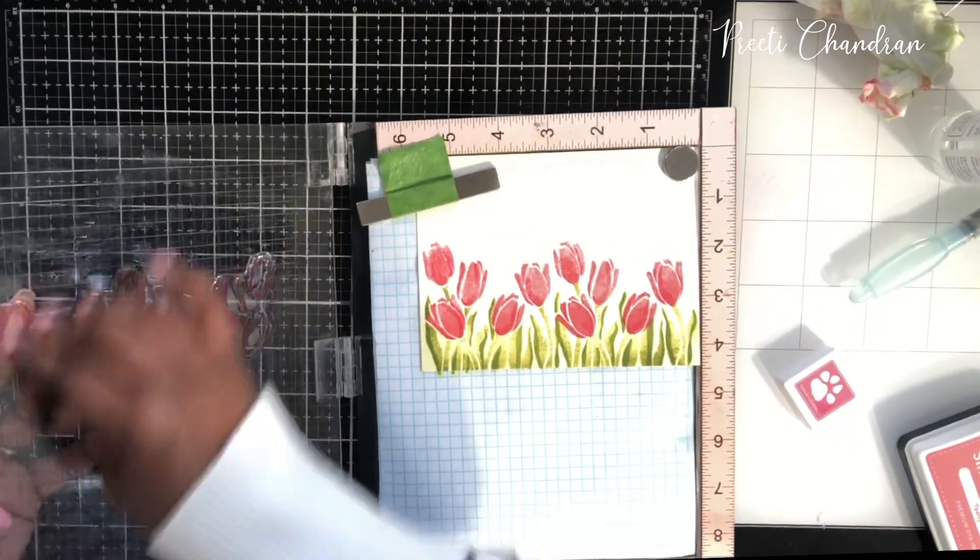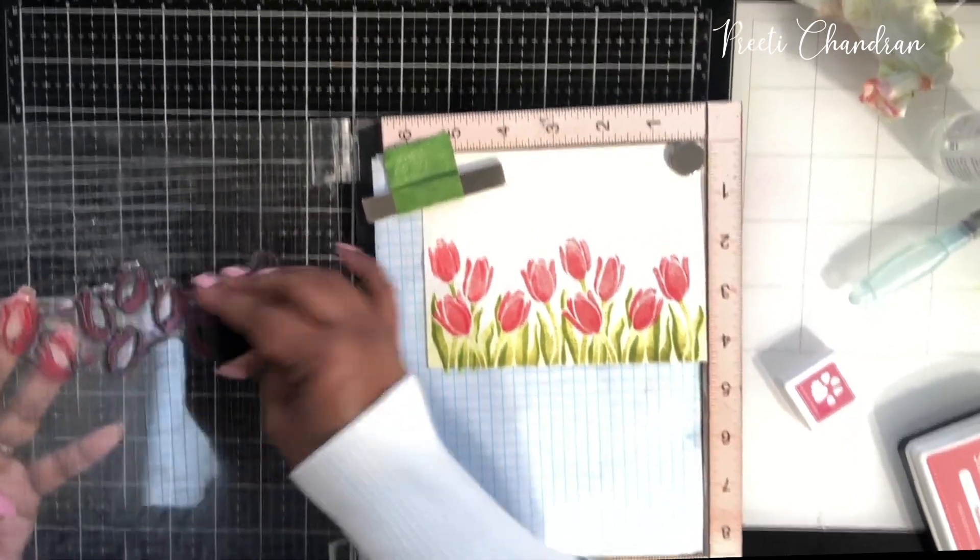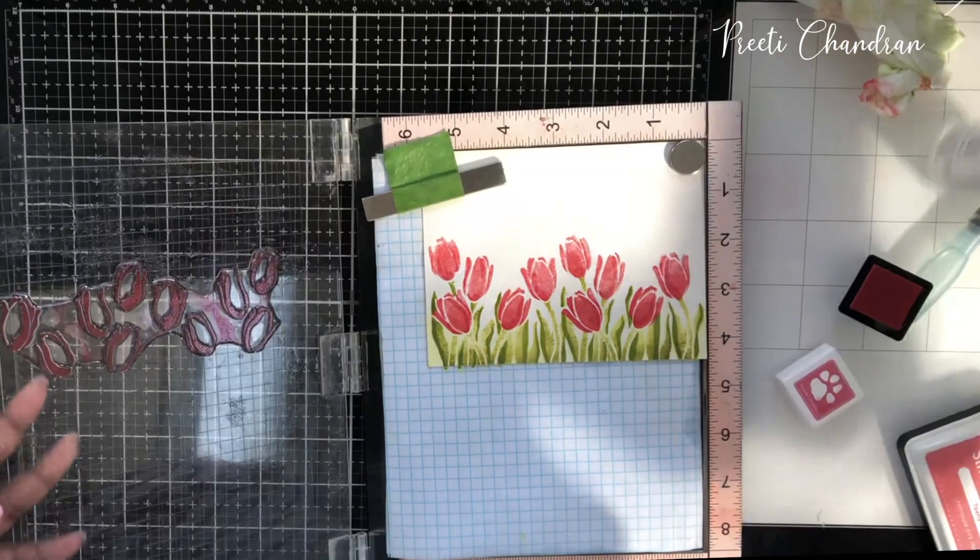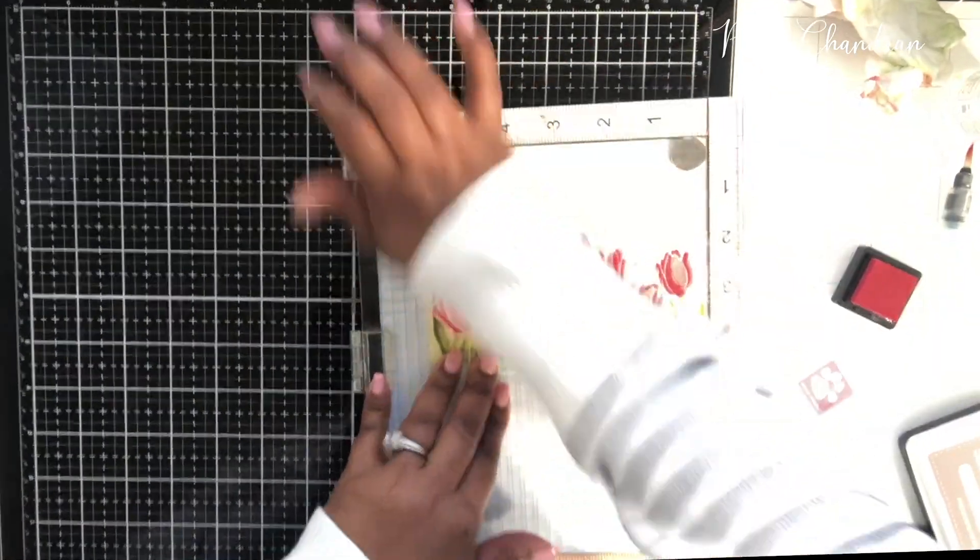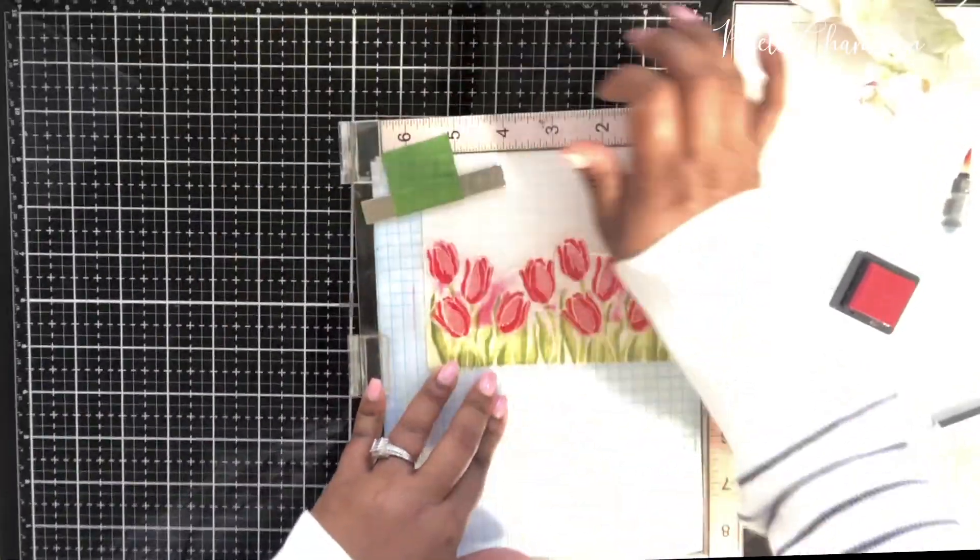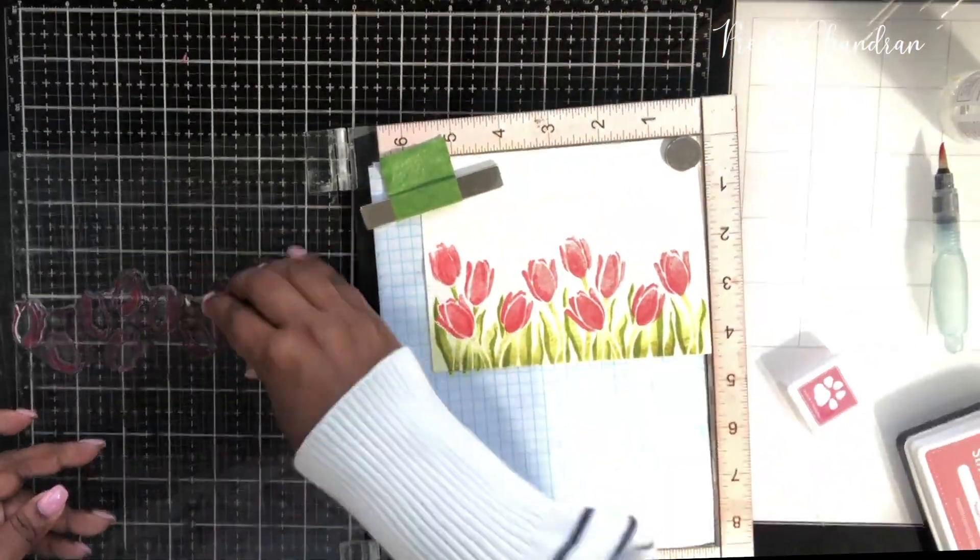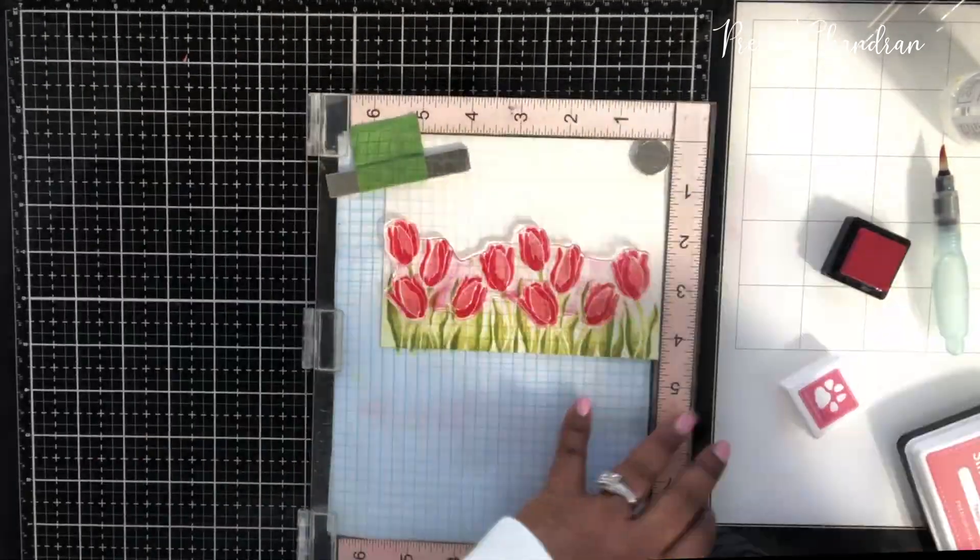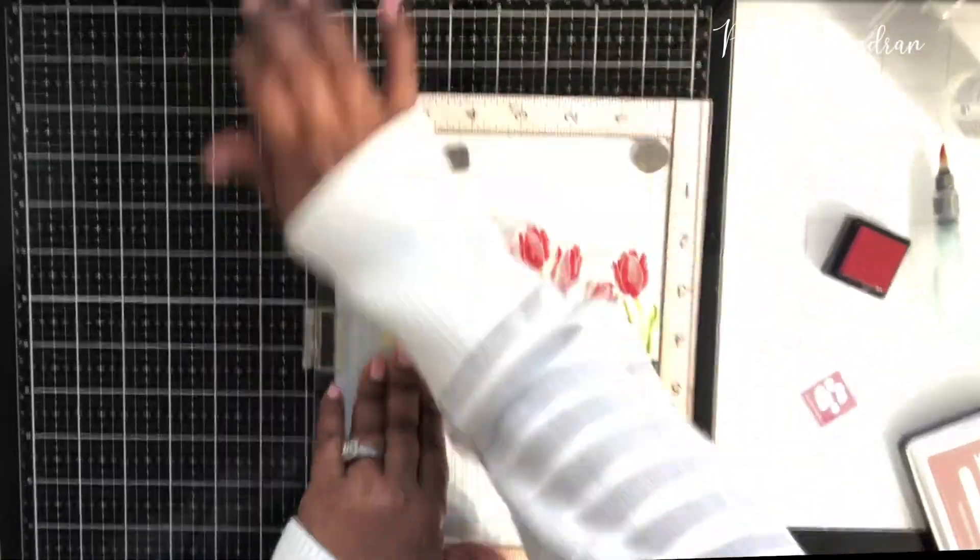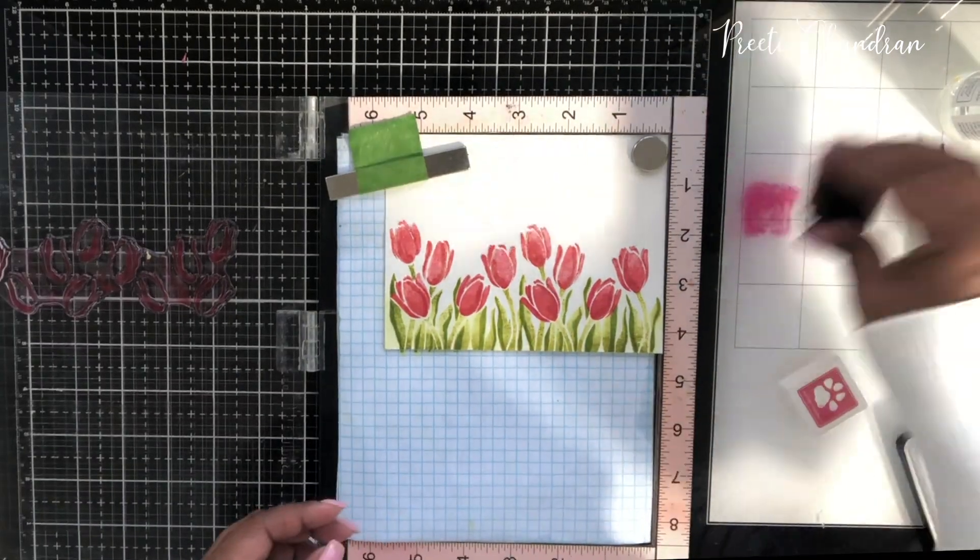Once I was done adding this multiple times, I did the same thing. I added the Hollyhock ink onto my surface and I picked it using my aqua brush and I just added a little bit more darker shading in the places where there would be shadow.